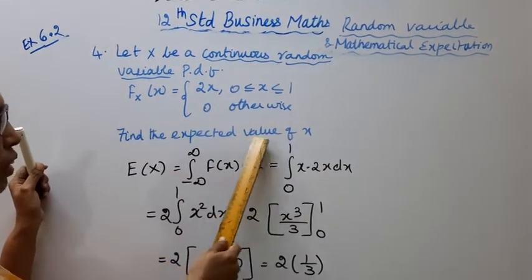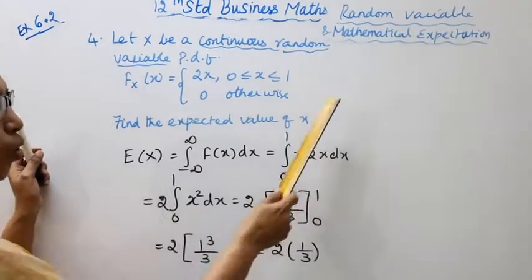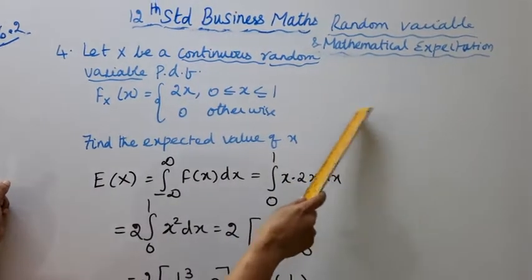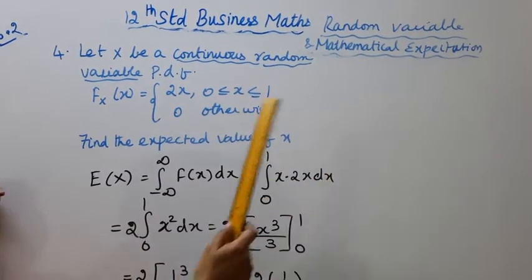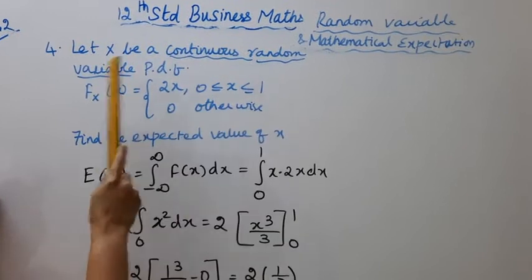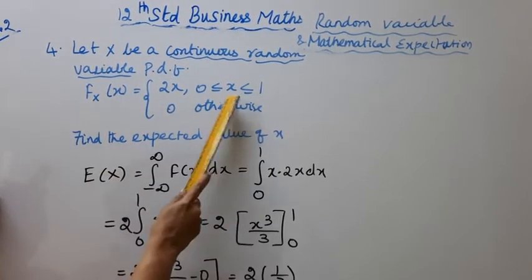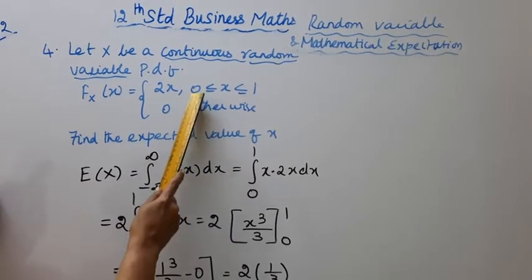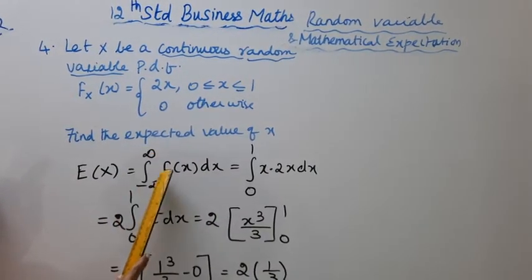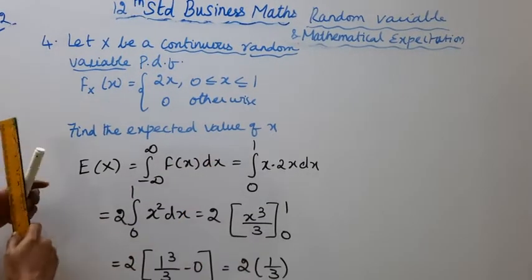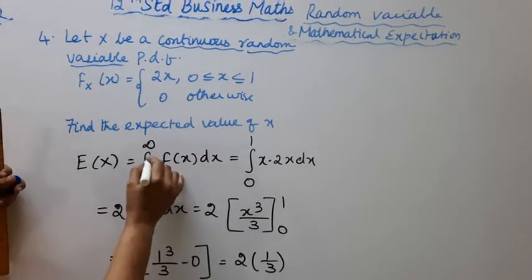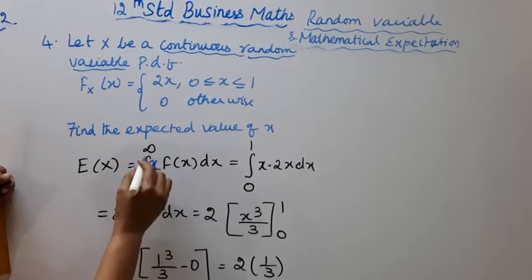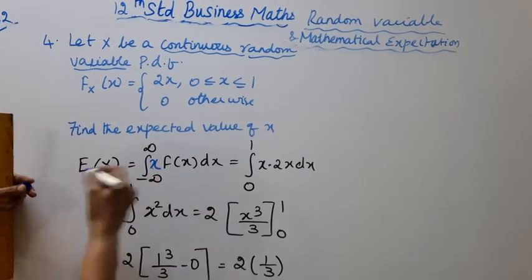Find the expected value of x. Now, continuous random variable formula is E(x) equals integration from minus infinity to infinity of x f(x) dx. The formula is E(x) equals integration of minus infinity to infinity x f(x) dx.